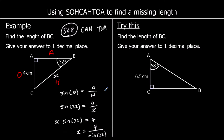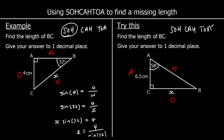One for you to try here — finding the length BC. First step: label the triangle. The hypotenuse is the longest side opposite the right angle. Opposite the angle we're using is called the opposite, and in between the angle and the right angle is called the adjacent. Which two lengths are we going to use? O and A — we're not using H; we don't know what it is and we're not trying to work it out. So that means we're using TOA.